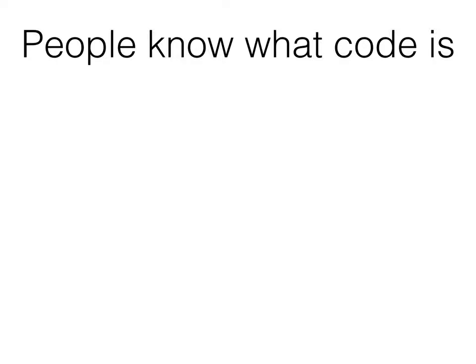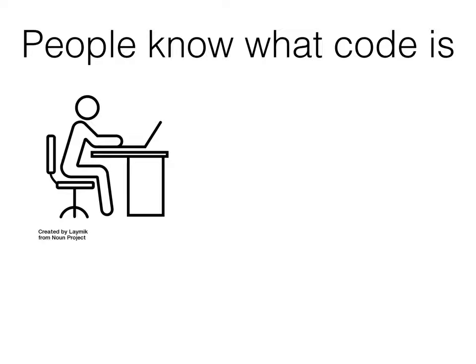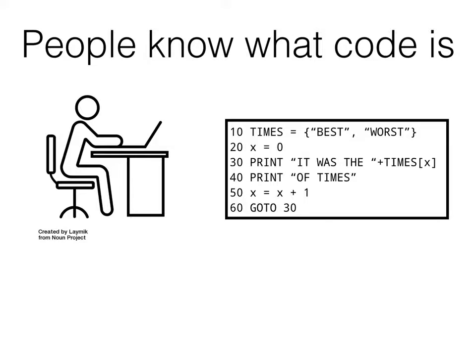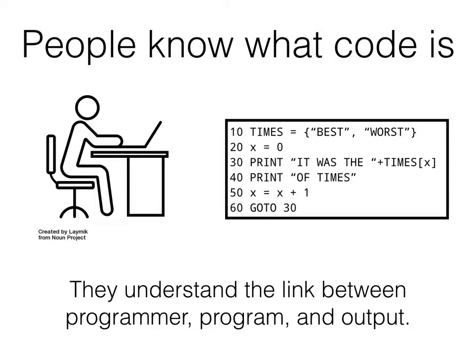People actually have a pretty good understanding of what code is. If you go back to the 1980s or 1970s, you'll find books in children's libraries or magazines on shelves that just talk about code very casually — books aimed at eight-year-olds that explain what a register is. And even today, people understand that someone sits at a desk and writes words into a machine, and that machine can then execute those as instructions, and that's how a program works.